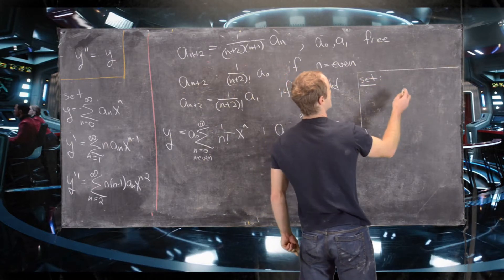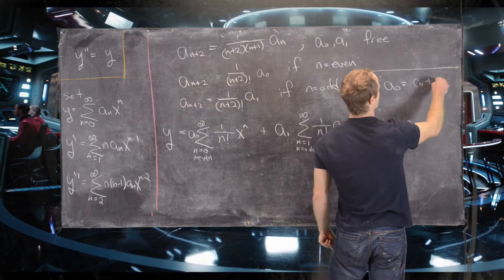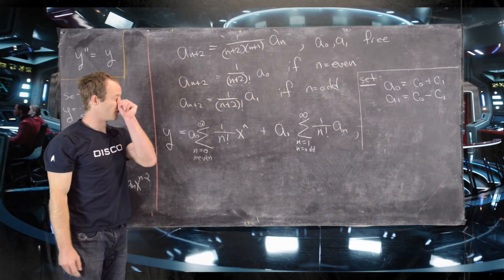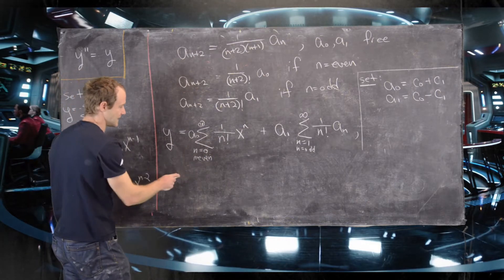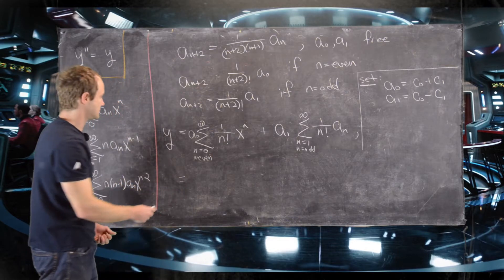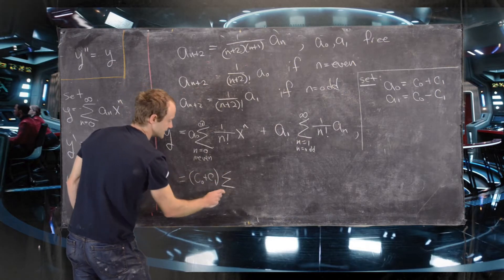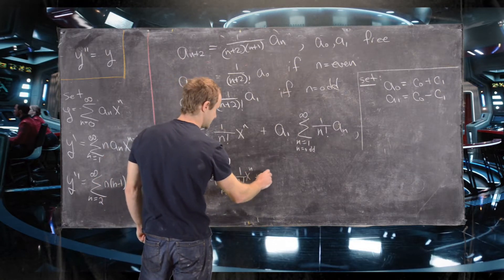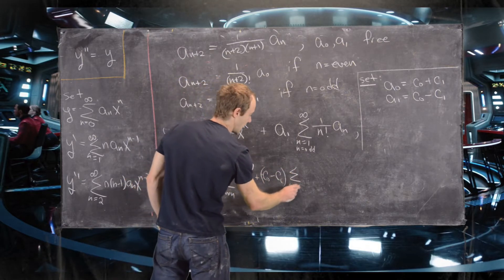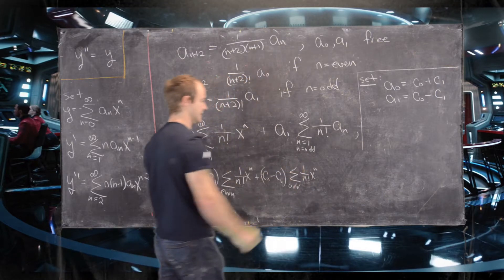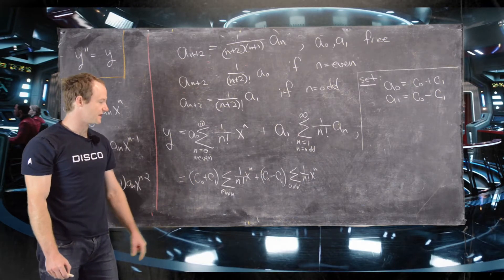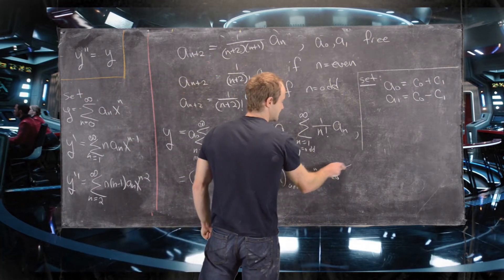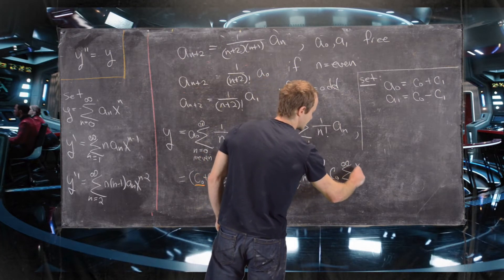To put this in a more familiar form, we make the change of variables: a₀ = c₀ + c₁ and a₁ = c₀ − c₁. We don't lose any information since we still have two degrees of freedom. This lets us write: y = (c₀ + c₁)·Σ(even) xⁿ/n! + (c₀ − c₁)·Σ(odd) xⁿ/n!. Combining c₀ terms gives c₀·Σ xⁿ/n!, and combining c₁ terms — positive for even, negative for odd — gives c₁·Σ(−1)ⁿ xⁿ/n!.